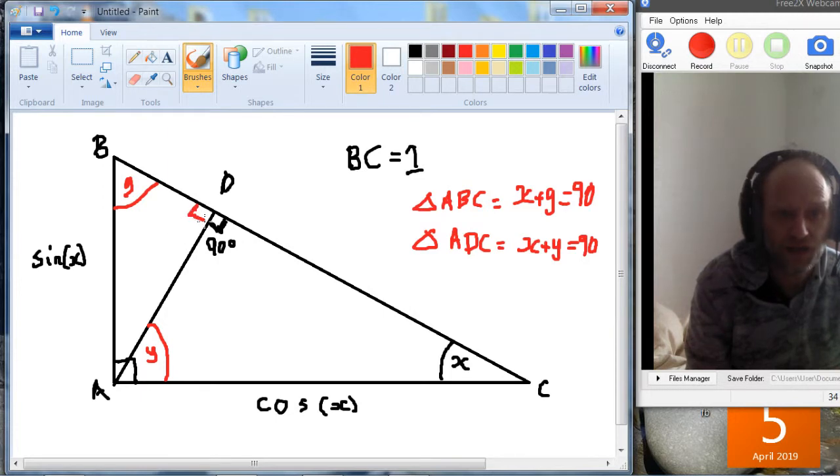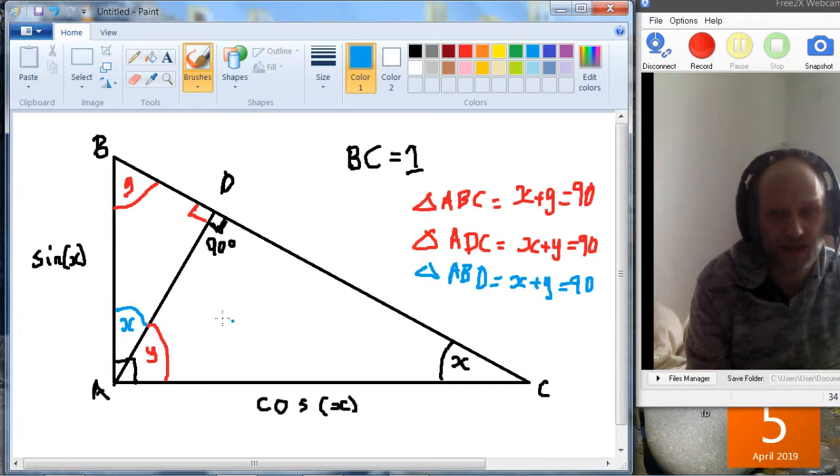And then if we look at this triangle here, triangle ABD, we have Y and a right angle. So actually we know that, let's call this X, that this X, again, plus Y equals 90. So the blue X and the black X are the same as well. So this is X, this is X, and these are both 90 minus X.